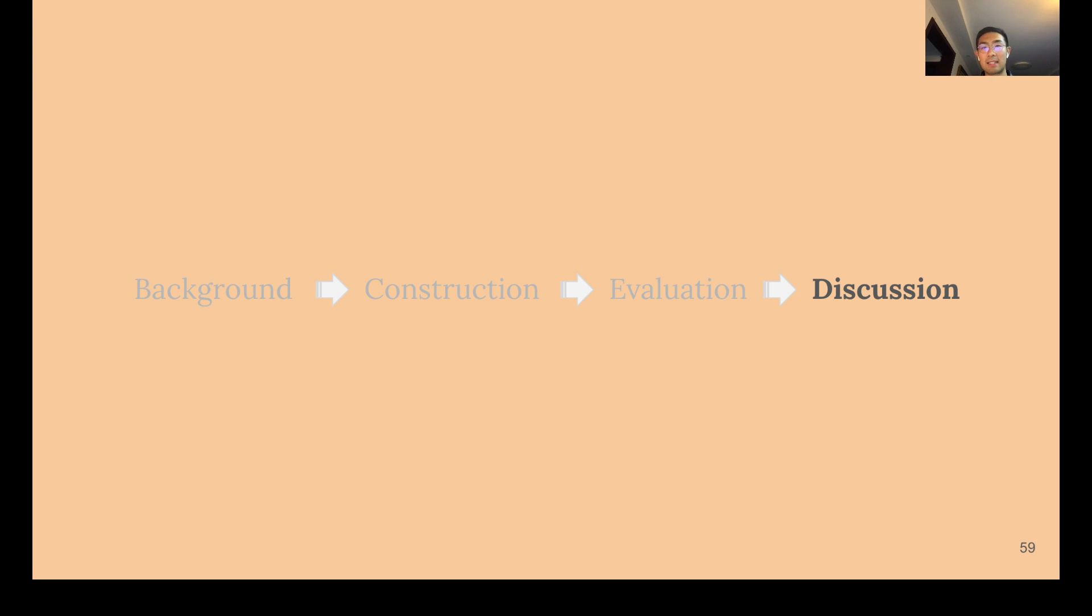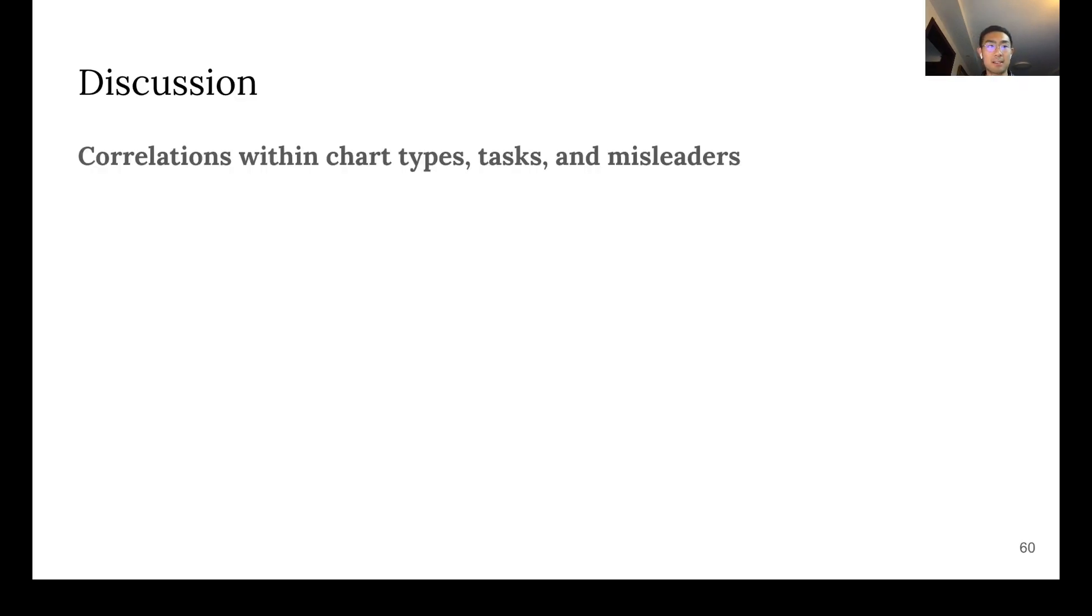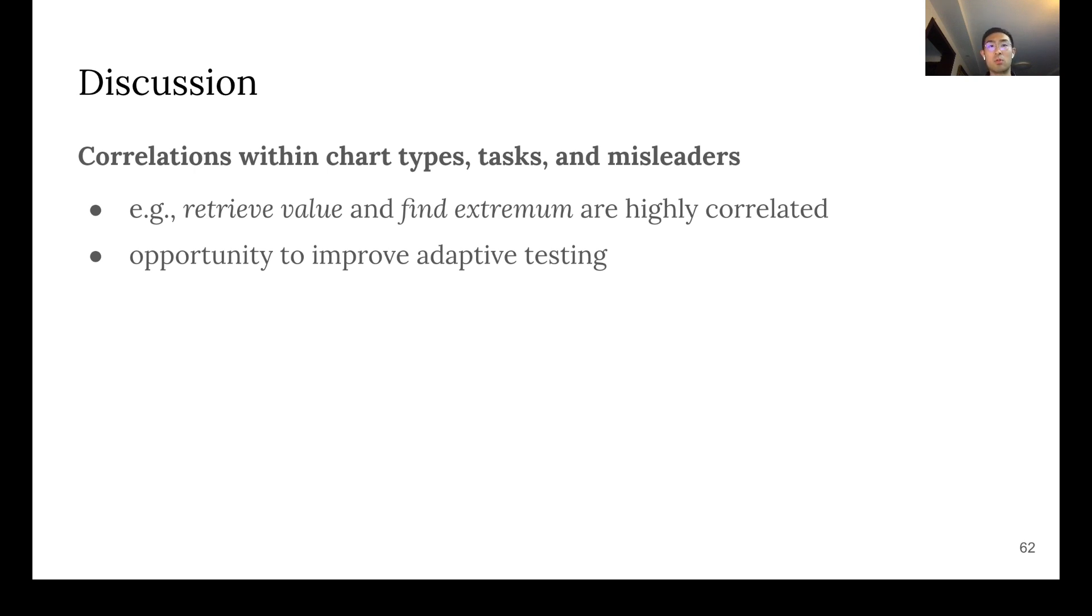Moving to the last chapter, I'd like to briefly discuss some interesting findings. The topic is correlations within chart types, tasks, and misleaders. Through our studies and past studies, many participants were asked to answer these visualization literacy questions. We used these data to investigate the correlations of performance within different chart types, tasks, and misleaders. For example, in VLAT items, the tasks RetrieveValue and FindExtremum have high correlation. And we also found high correlations among many such pairs. This kind of high correlation has many implications. First, this is an opportunity to further improve adaptive testing. And second, we can also use them to rethink taxonomy in visualization literacy tasks.